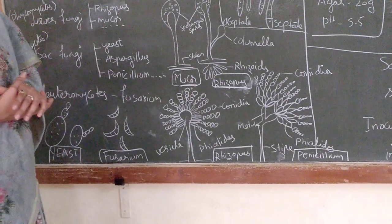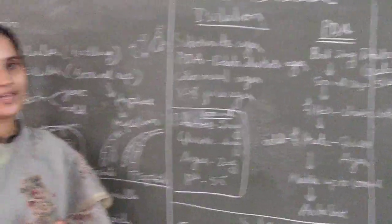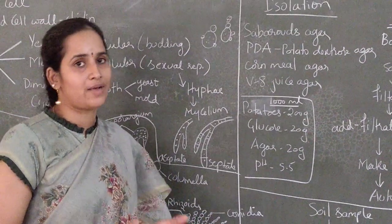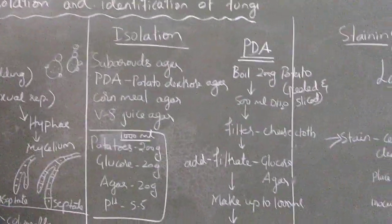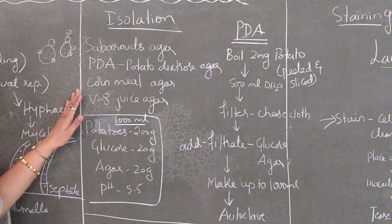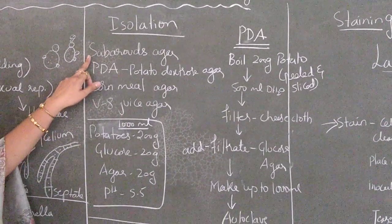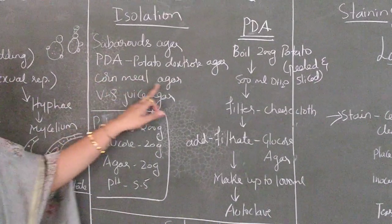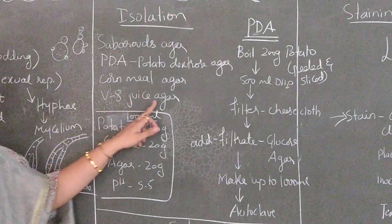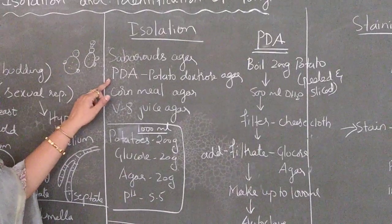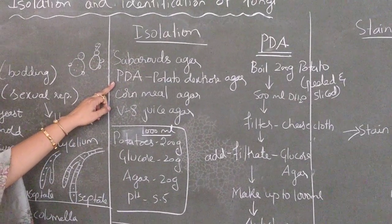Now coming to how to isolate fungi from different samples — whether it is a water sample, soil sample, or food sample — the process will be the same. These are some of the common agar media used to isolate fungi: Sabouraud's agar, PDA agar (potato dextrose agar), cornmeal agar, and V8 juice agar. Most commonly, Sabouraud's agar and PDA agar are used for isolation of fungi.